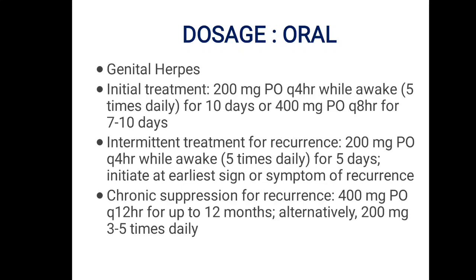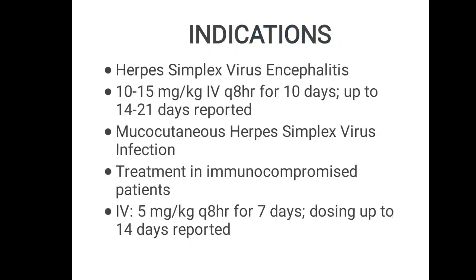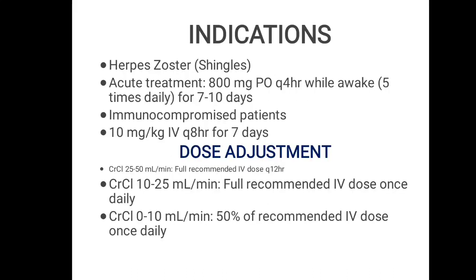Alternatively, 200 mg 3 to 5 times daily. For herpes simplex virus encephalitis, the dose is 10 to 15 mg per kg IV every 8 hours for 10 days, up to 14 to 21 days as reported in the literature. It is also used in mucocutaneous herpes simplex virus infection in immunocompromised patients, with an IV dose of 5 mg per kg every 8 hours for 7 days; dosing up to 14 days has been reported.